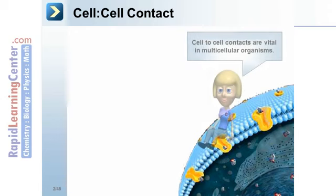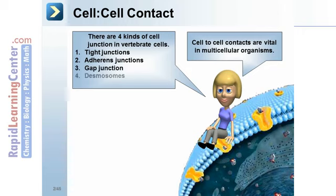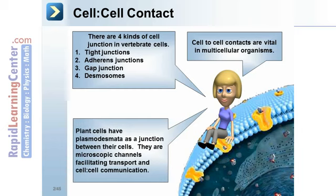This is a schematic of an outer cell membrane. Cell-to-cell contacts are vital in multicellular organisms. There are four kinds of cell junctions in vertebrate cells: tight junctions, adherence junctions, gap junctions, and desmosomes. Plant cells have plasmodesmata as junctions — microscopic channels facilitating transport and cell-cell communication.